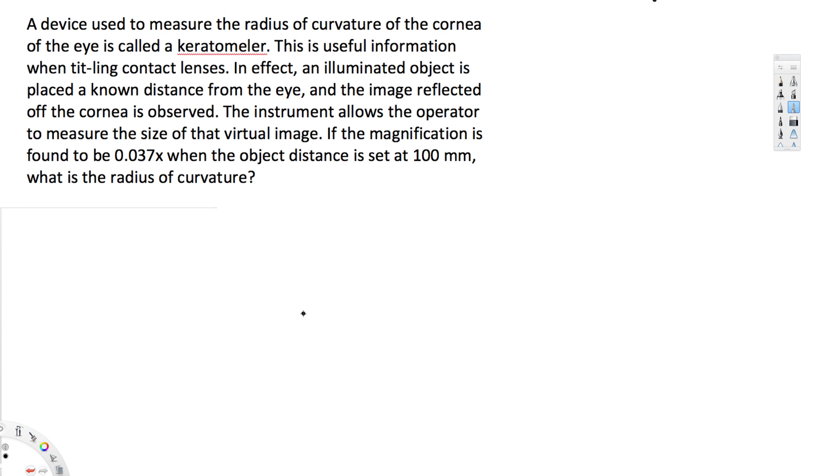What's going on guys, let's look at this problem. The question asks: a device used to measure the radius of curvature of the cornea of the eye is called a keratometer. This is useful information when fitting contact lenses. In effect, an illuminated object is placed a known distance from the eye and the image reflected off the cornea is observed. The instrument allows the operator to measure the size of the virtual image. If the magnification is found to be 0.037x when the object distance is set at 100 millimeters, what is the radius of curvature?